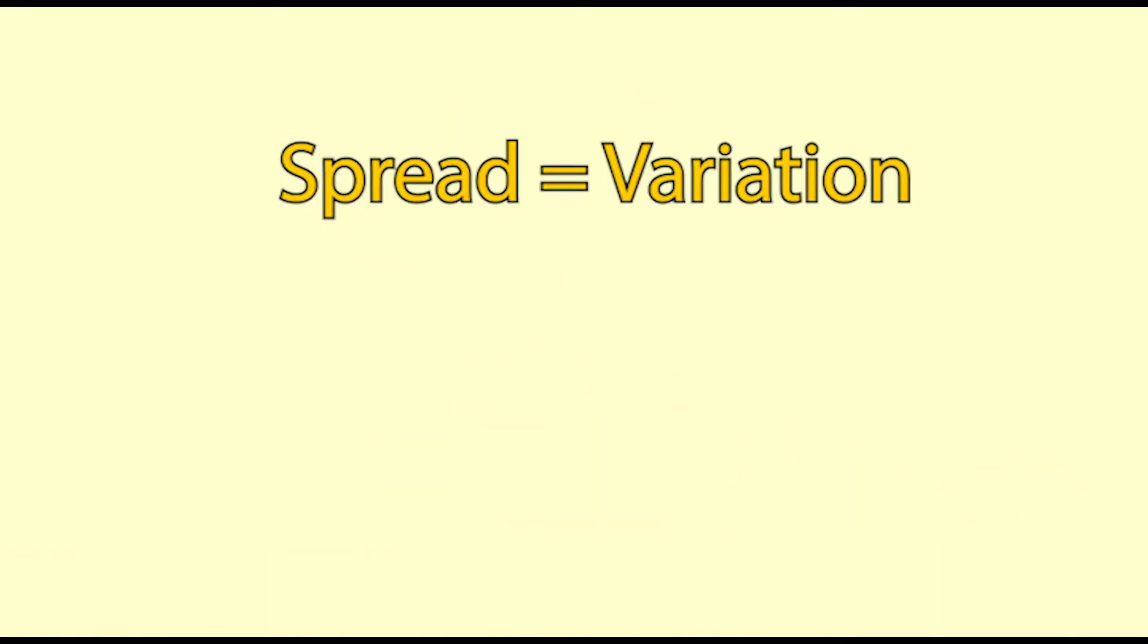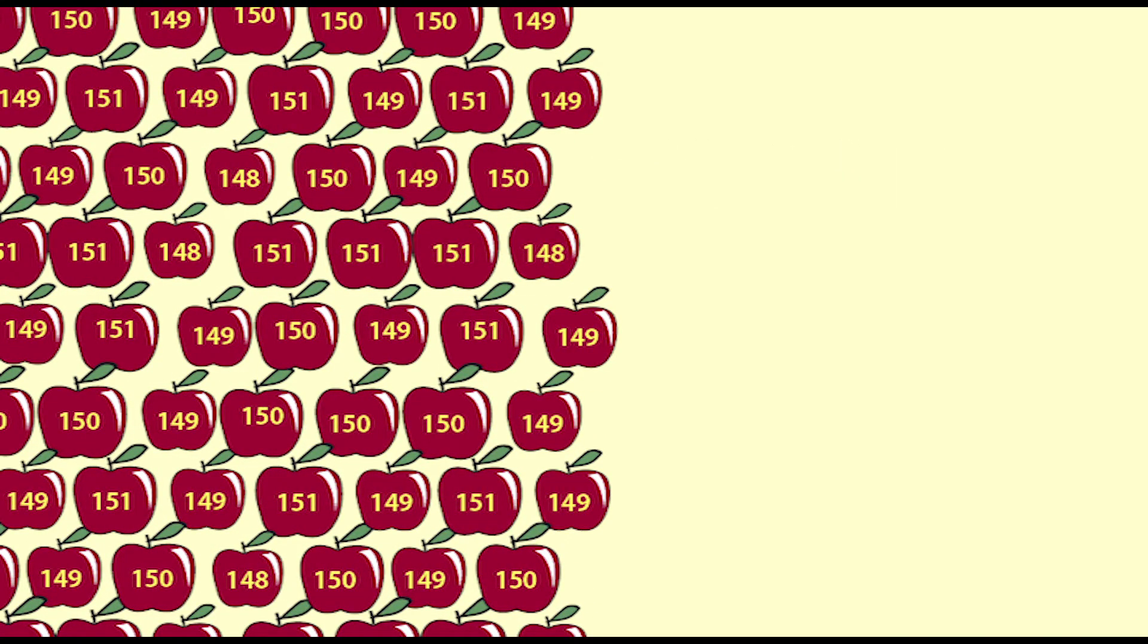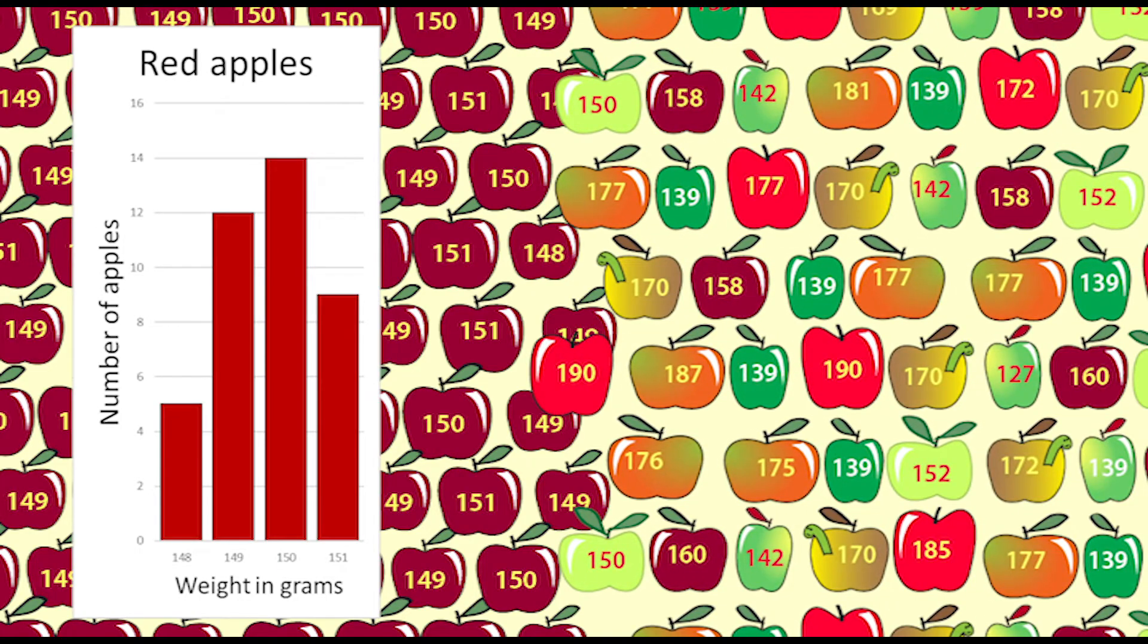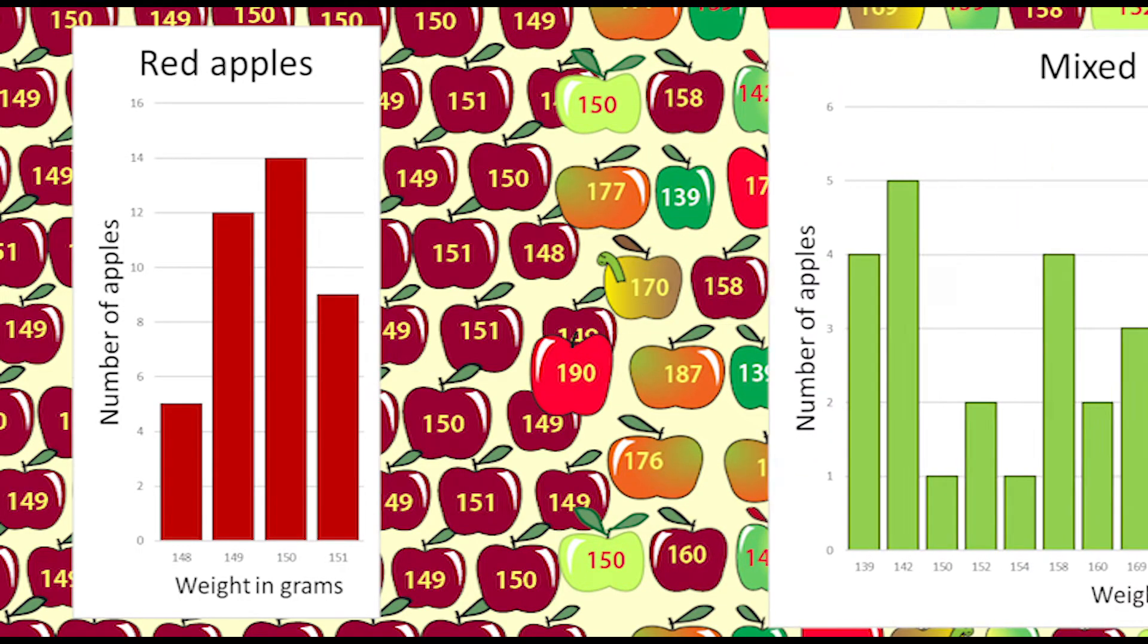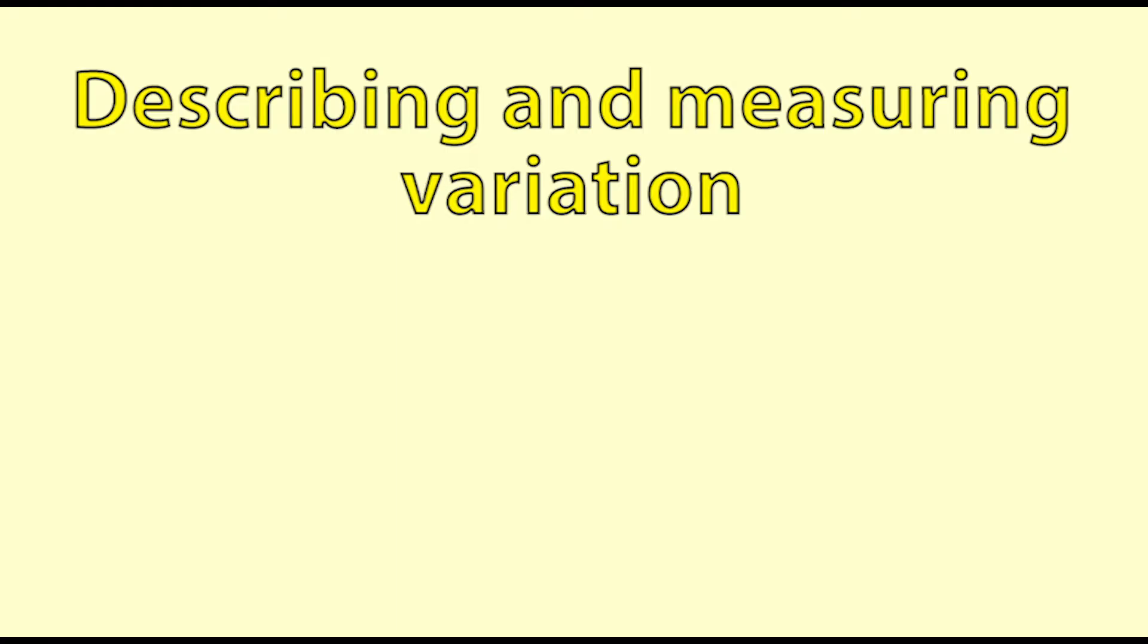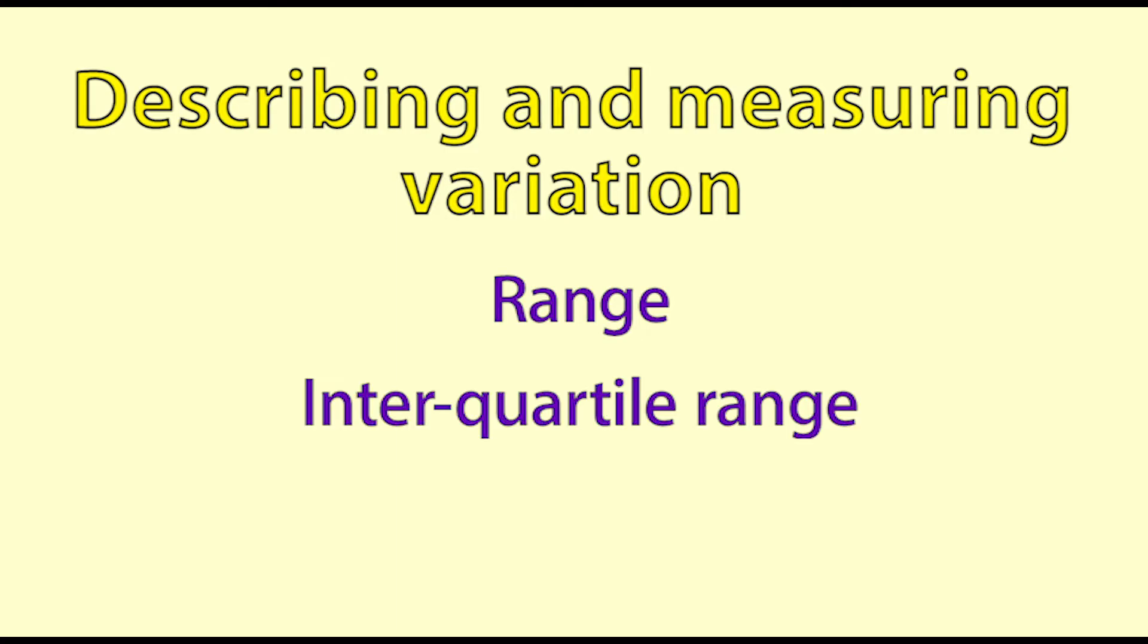The spread tells us how much variation there is in our data. If all our values are pretty similar with little variation then there will be little spread. If the values show a lot of variation then there will be a lot of spread. To describe or measure variation we can use the range, the interquartile range and the standard deviation.